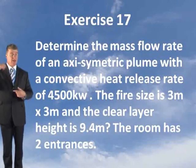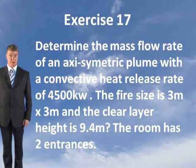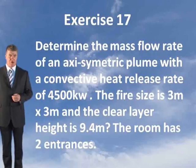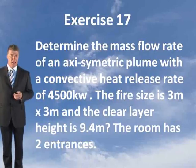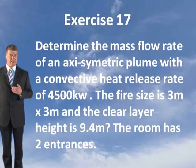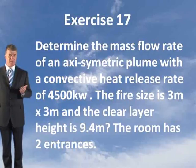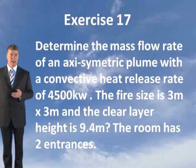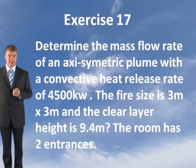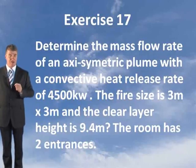In this exercise 17, determine the mass flow rate of an axisymmetric plume with a convective heat release rate of 4500 kilowatts. The fire size is 3 metres by 3 metres, the clear layer height is 9.4 metres, and the room has two entrances.